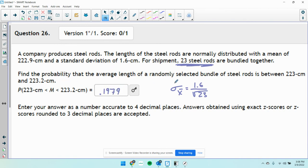That's all you have to remember. As soon as you see we're talking about a select group, you're going to have to divide your standard deviation by the square root of that sample size.